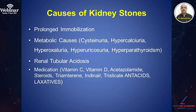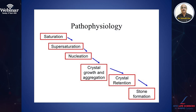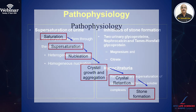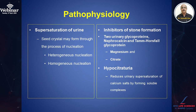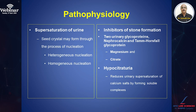Regarding pathophysiology: the first step is saturation, then the crystals become supersaturated, then they get nucleated, then there is crystal growth and aggregation, then the crystals are retained, and finally they give rise to stone formation. Nucleation can be heterogeneous or homogeneous — that decides the nature of the stone. There are various inhibitors of stone formation, like urinary glycoproteins nephrocalcin and Tamm-Horsfall glycoprotein, magnesium, citrate, and hypocitraturia, that reduce urinary supersaturation of calcium salts by forming soluble complexes.